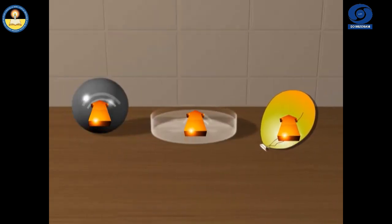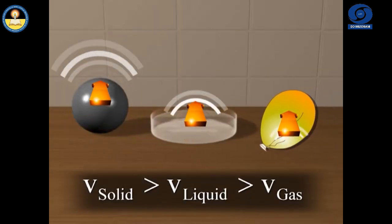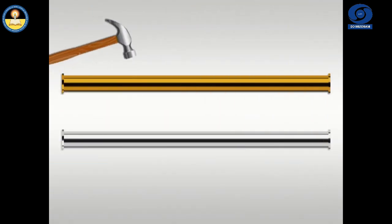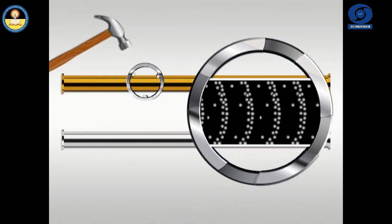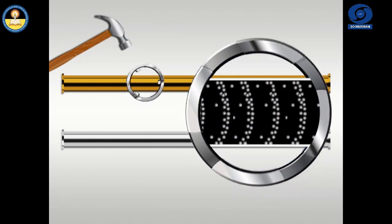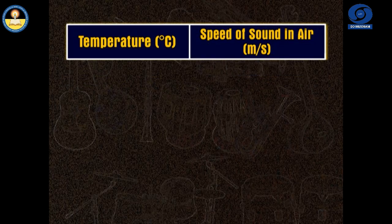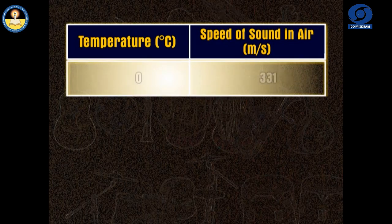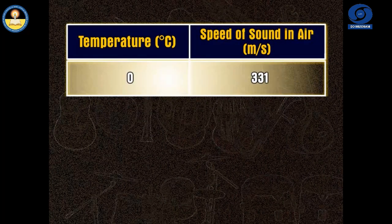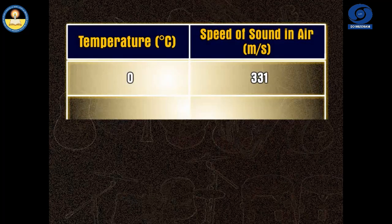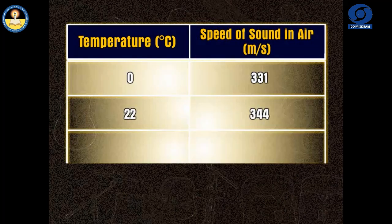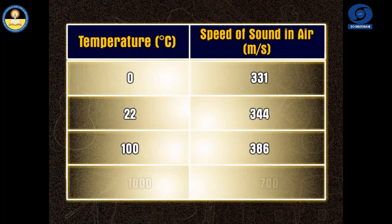It has been observed that the speed of sound decreases when we go from solid to gaseous state. In any medium, as we increase the temperature, the speed of sound also increases. For example, the speed of sound in air is 331 meter per second at 0 degree Celsius, and 344 meter per second at 22 degree Celsius.